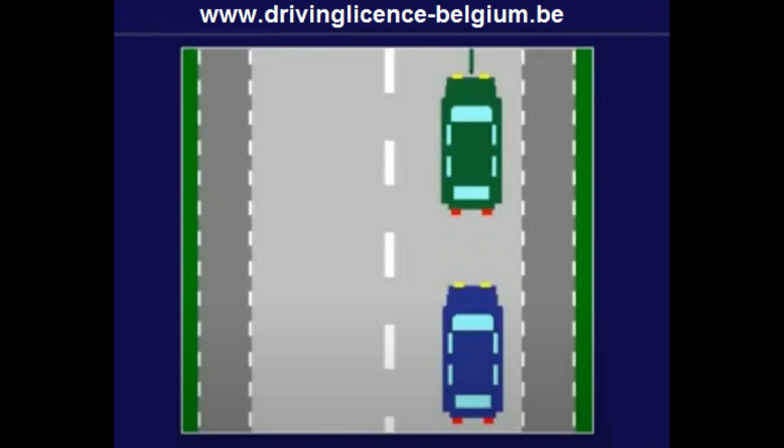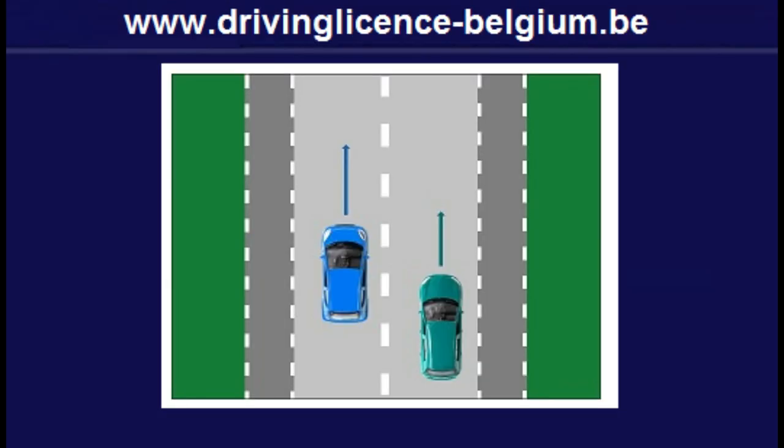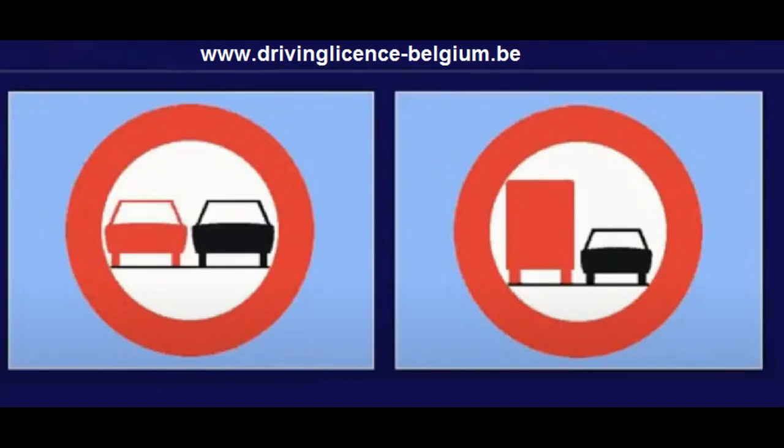Overtaking — a broken white line. When the driver in front of you drives slower than the maximum speed limit, you are allowed to drive over a broken white line to overtake that driver, except when a traffic sign prohibits you to do so.